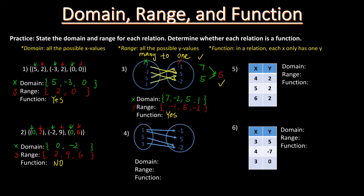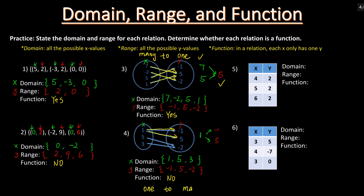Question 4 is a similar question. For the domain, we have {1, 5, 3}. For the range, we have {-1, 5, -2}. Let's check if it is a function: 1 maps to negative 1 and 1 maps to 5. The x-value 1 has two y-values, so it's not a function. We can see that if a relation has one x mapping to many y-values, then it's not a function.